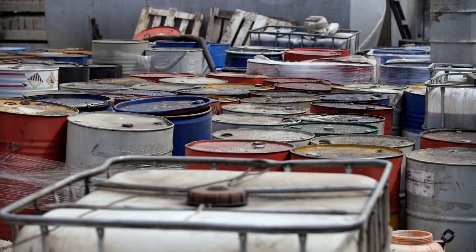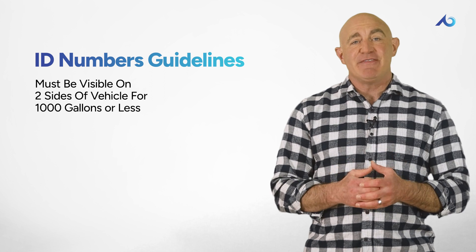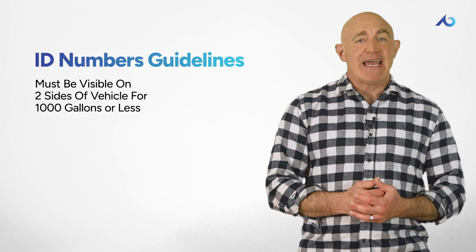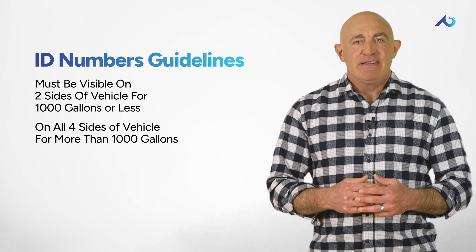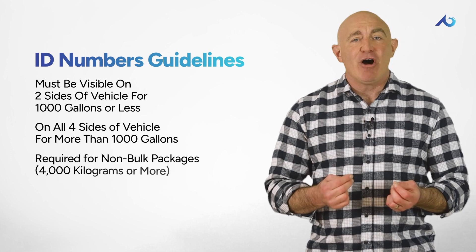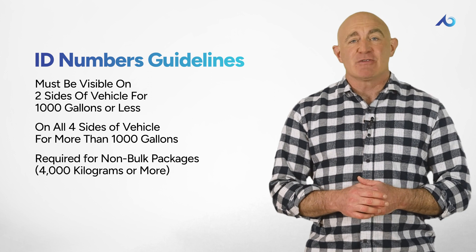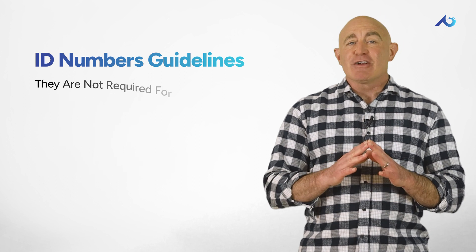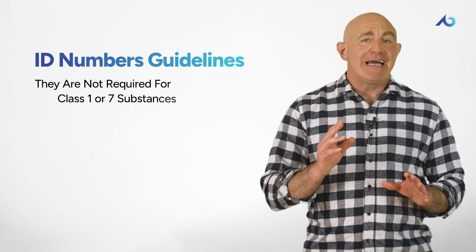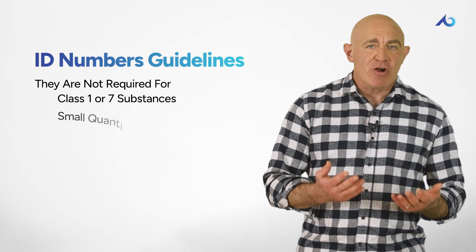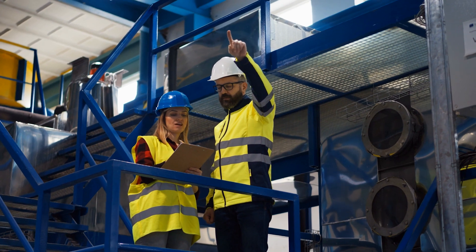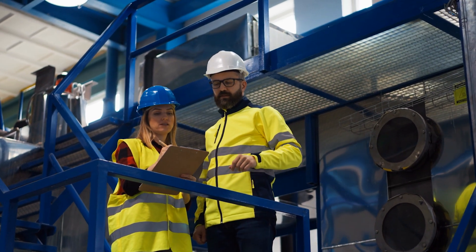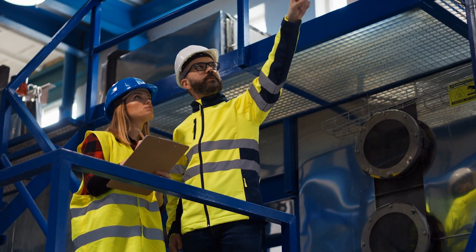ID numbers are required on all bulk packages and must be visible on two sides of the vehicle containing 1,000 gallons or less, or on all four sides for more than 1,000 gallons. They are also required for non-bulk packages of 4,000 kilograms or more. ID numbers are not required for class 1 or class 7 substances, for small quantities, or for combustibles. Consult with your supervisor to check for additional exceptions and rules that may apply to your particular situation.